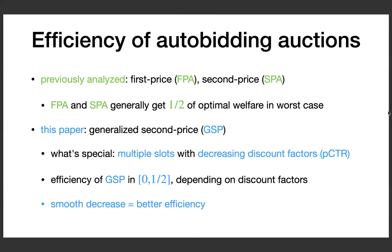This paper is about generalized second price auctions, or GSP. What's special about GSP is that there are multiple slots to be allocated, and these slots are associated with decreasing discount factors — for example, predicted CTRs, click-through rates. The discount factors are multiplied with the value, and the product contributes to the welfare. What we show for GSP is that the efficiency lies somewhere between zero and one half, and the precise ratio actually depends on the discount factors. We give a bound which is a function of the discount factors.